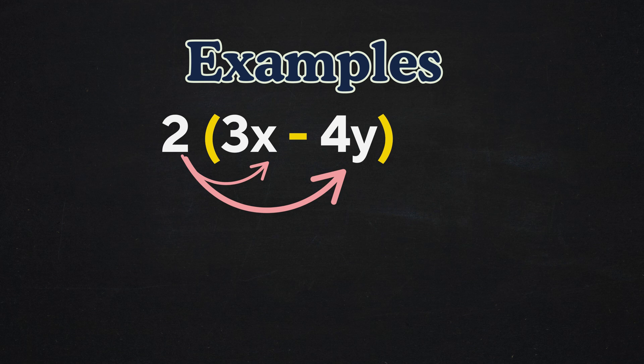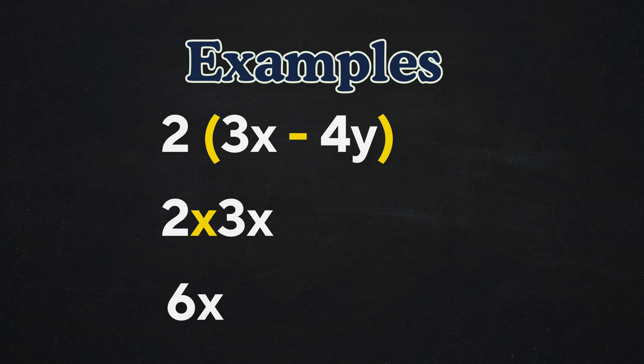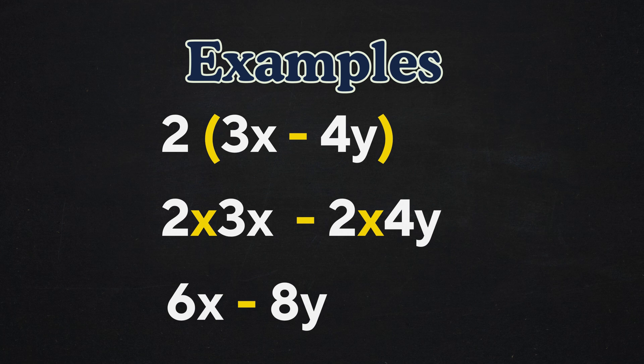By distributing the 2 across each term, we get 2 times 3x, which is 6x, and 2 times negative 4y, which is negative 8y. So the distributed form is 6x minus 8y.